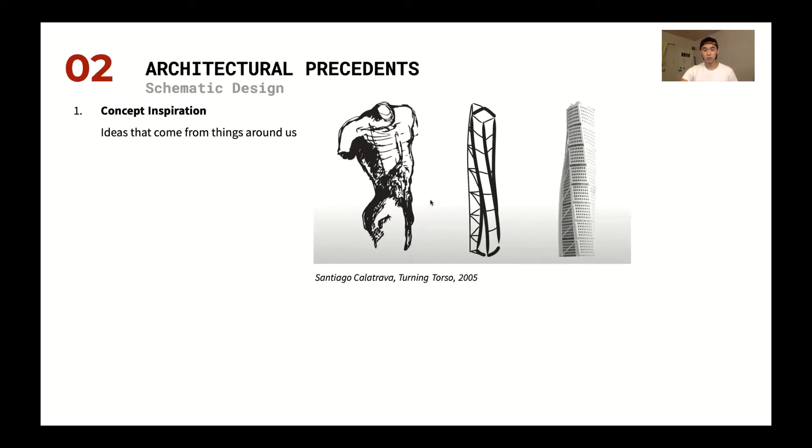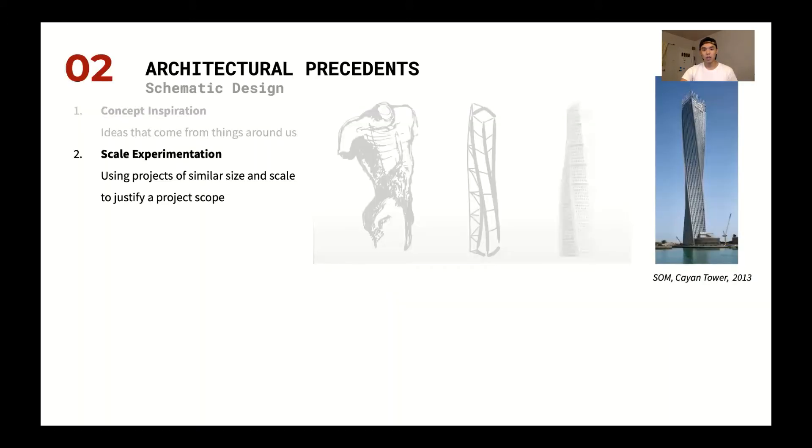And so here's SOM's Cayan Tower. And this Cayan Tower is actually very similar. You have the spinning form. But there are striking differences where the Cayan Tower actually reads more of a twisting volume rather than Santiago Calatrava's segmented spine. And so you can start to create precedent. While SOM never formally says we drew inspiration from that project, they look very similar. It's hard to say that one is not speaking to one another.